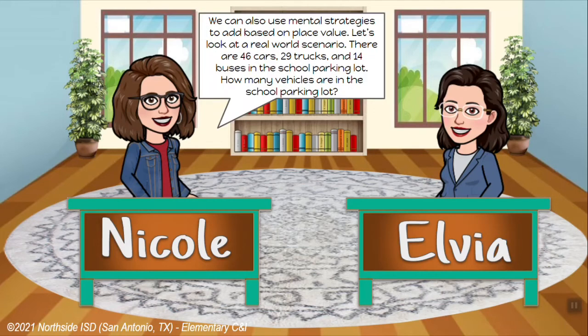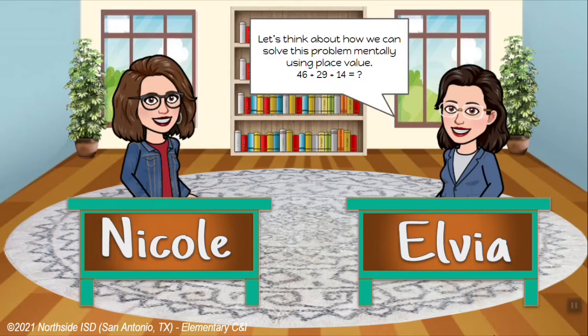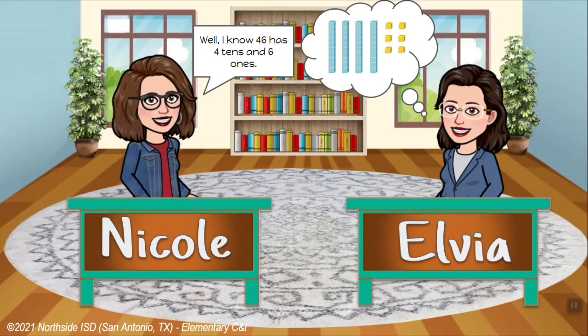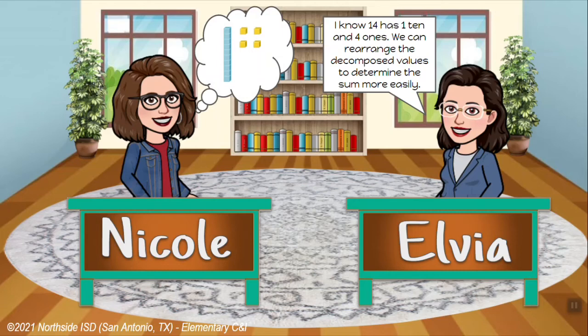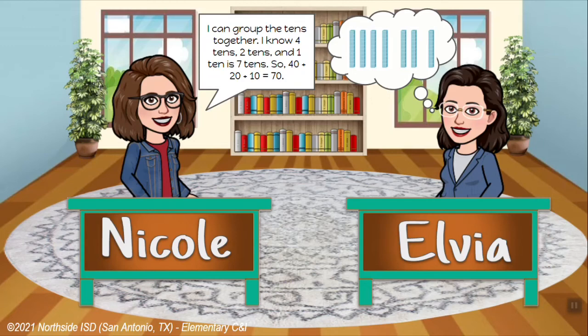We can also use mental strategies to add based on place value. There are 46 cars, 29 trucks, and 14 buses in the school parking lot. How many vehicles are in the school parking lot? 46 plus 29 plus 14 equals something. I know 46 has 4 tens and 6 ones, 29 has 2 tens and 9 ones, and 14 has 1 ten and 4 ones. We can rearrange the decomposed values to determine the sum more easily. I can group the tens together: 4 tens, 2 tens, and 1 ten is 7 tens. So 40 plus 20 plus 10 equals 70.